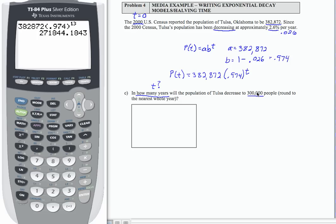So that means the output is 300,000. I want to find the input. So what I need to do is set up an equation where 300,000 is equal to my function for P of T, 382,872 times 0.974 to the T.